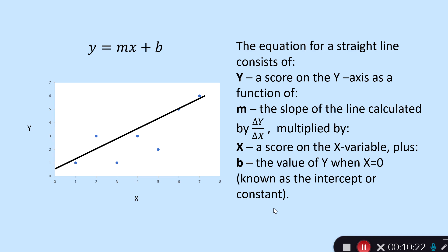Breaking down the equation: a score on y is a function of the slope times whatever value you input on the x-axis, plus b — the intercept — which is where the line crosses the y-axis when x is zero. In this particular example, the intercept looks to be just a little above 0.5.